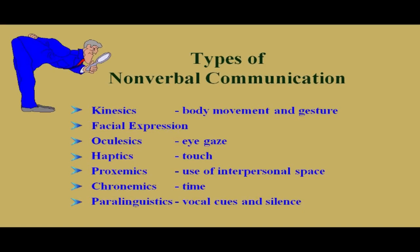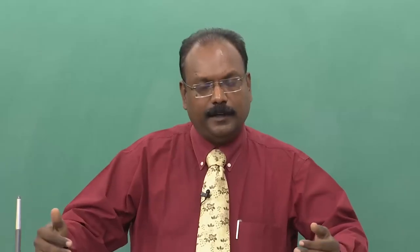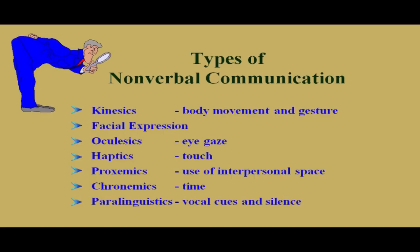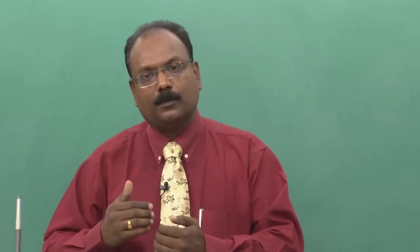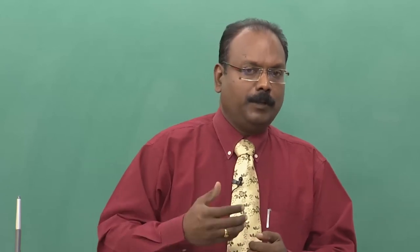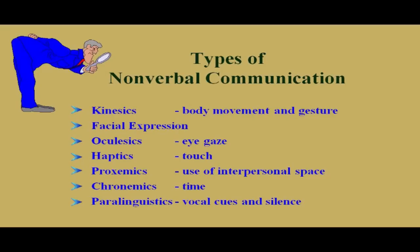Next we have haptics, which refers to touch — the study of touch including handshake, patting, and hugging. Then proxemics, which is the study of the use of interpersonal space — how much space we give when we do not know somebody, and how much we reduce when somebody becomes closer. Chronemics is another interesting aspect — about our use and misuse of time.